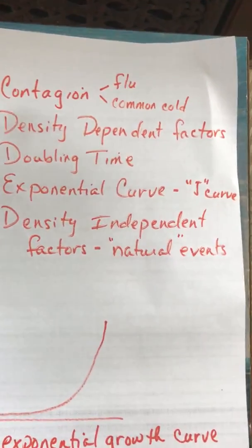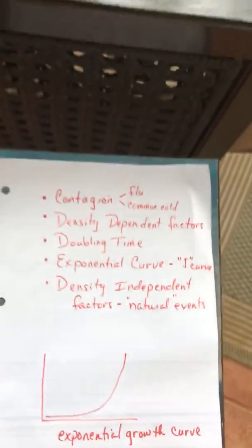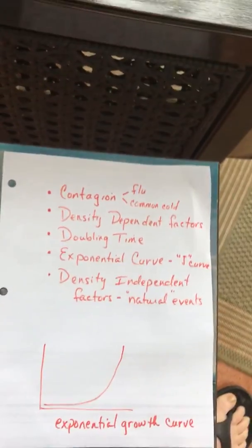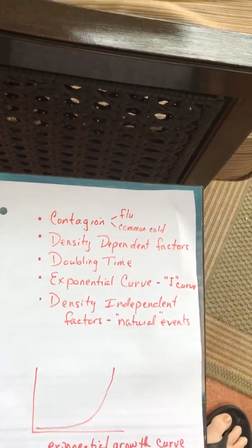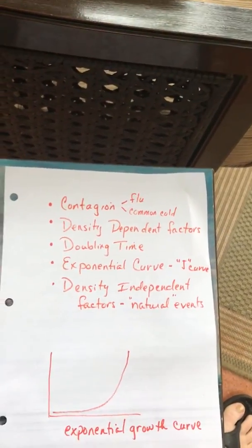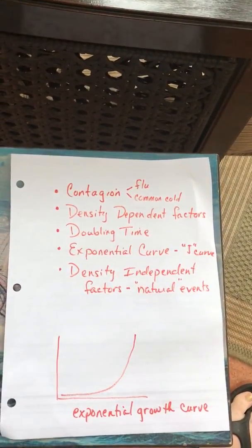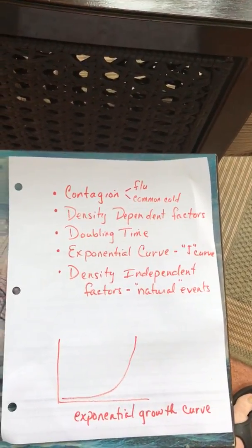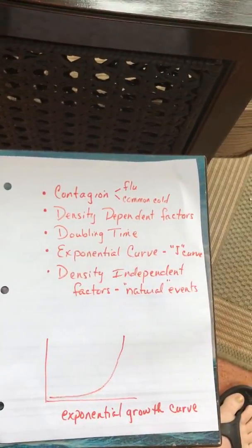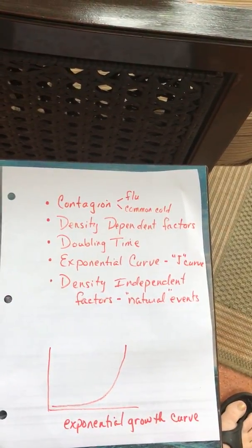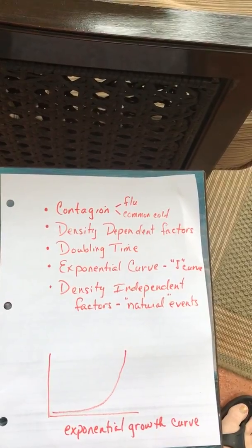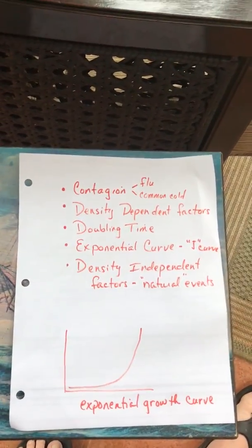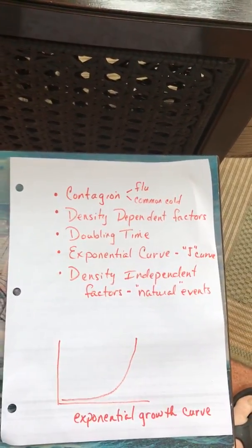The first thing we're going to talk about is contagions — that's anything that you can catch from someone else. You'll learn more about that in AP Bio if you take AP Bio, but basically it's the flu or common cold where you're catching it from someone else through direct contact.